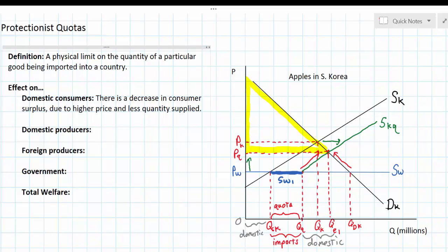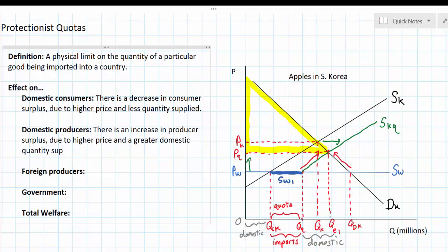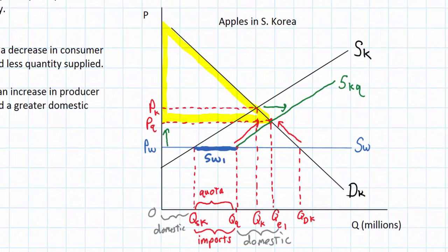What about domestic producers? This is more tricky to illustrate because there are now two domestic supply curves. However, one thing is clear: domestic producer surplus will be greater because the quantity supplied by domestic producers will be higher and the price they sell for will also be greater — an increase in producer surplus due to higher price and greater domestic quantity supplied. There are two areas representing domestic producer surplus: the blue shape from 0 to QSK up to the price, and then the area above the other segment of the domestic supply curve out to QE1.